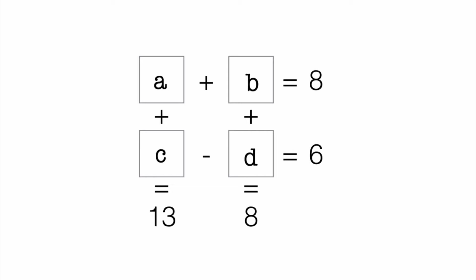We know certain operations between the unknowns that give us the result values. For example, A plus B is equal to 8, A plus C equals 13, B plus D equals 8.